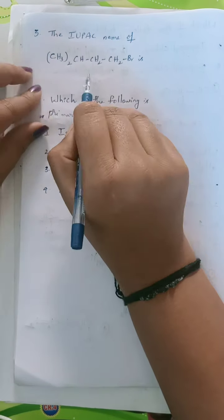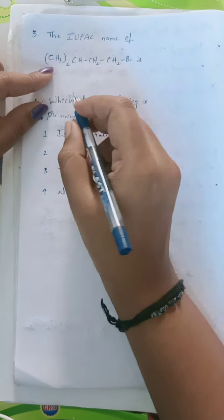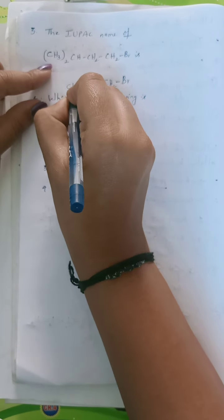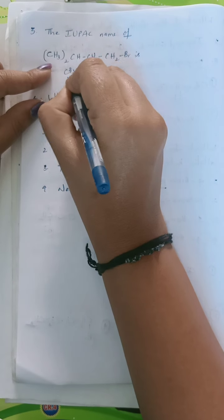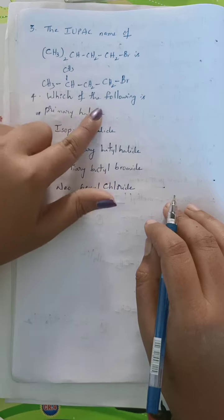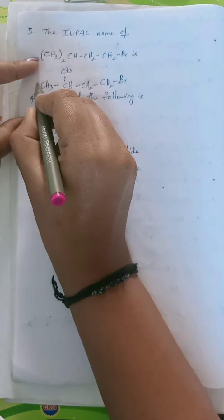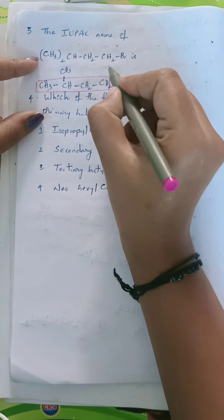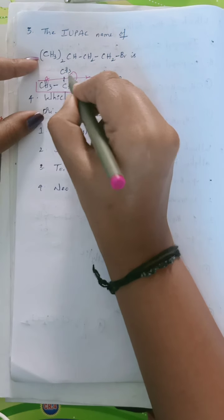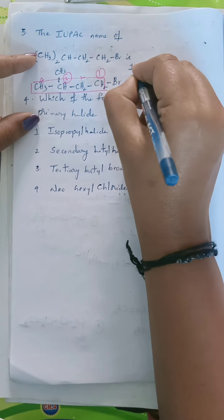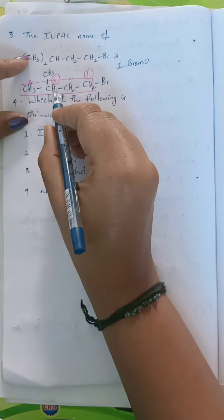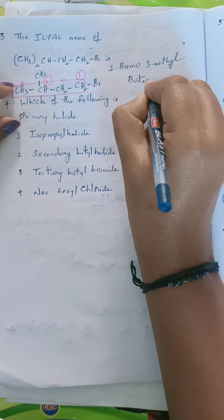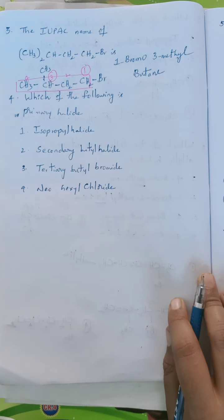Third question: write the IUPAC name of the given structure. The structure has bromine on a CH2, attached to a CH2, which is attached to a CH that also bears two CH3 groups. Taking the parent chain and giving numbering: four carbons total, bromine at position 1, methyl group at position 3. According to alphabetical order, bromo comes before methyl. So the IUPAC name is 1-bromo-3-methylbutane.